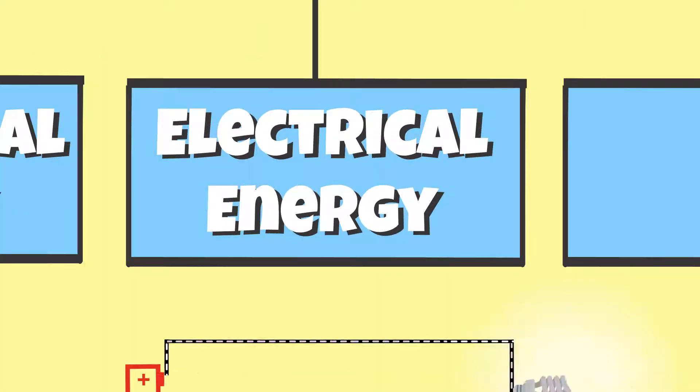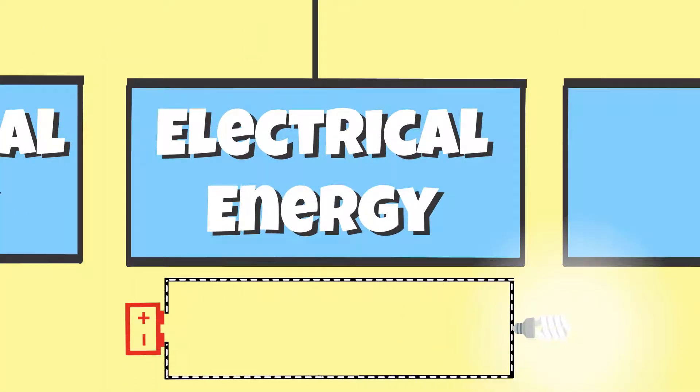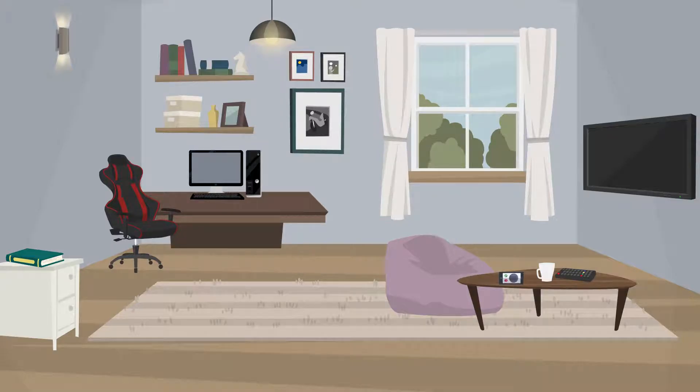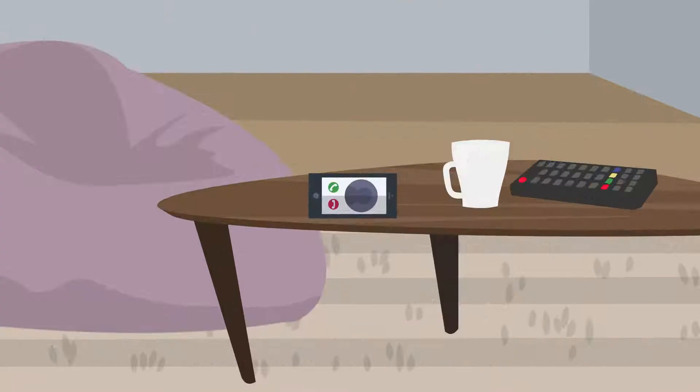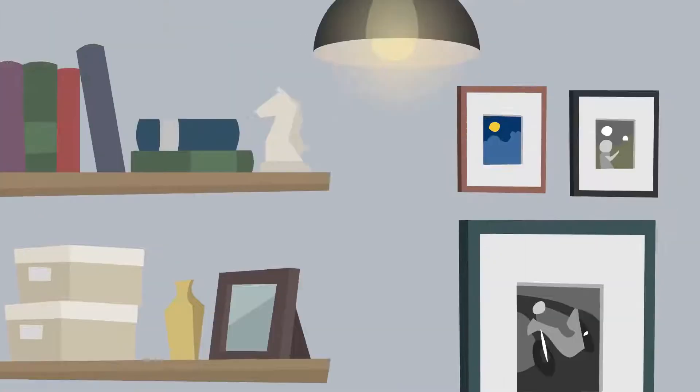Electrical energy is kinetic energy that moves through the flow of electrons and electrical current. Examples of uses of electrical energy are a cell phone, a computer, a light bulb, and a television.